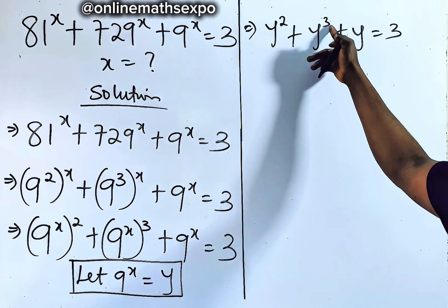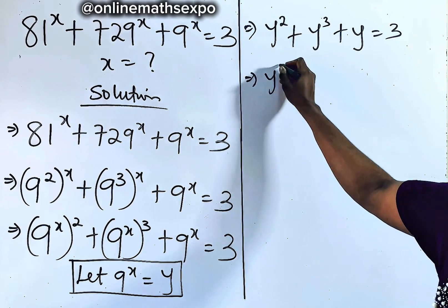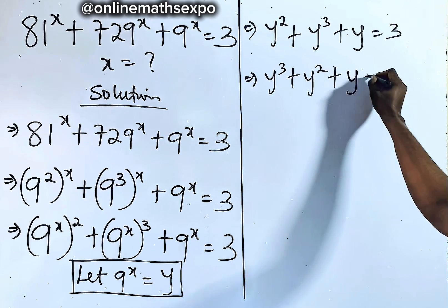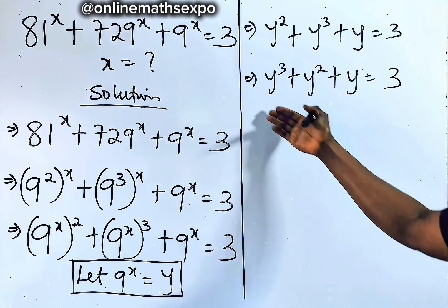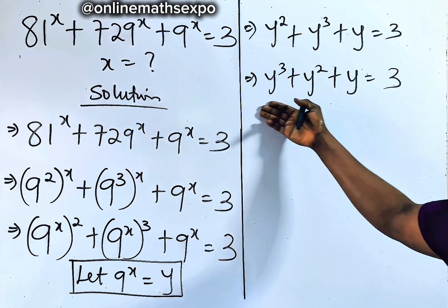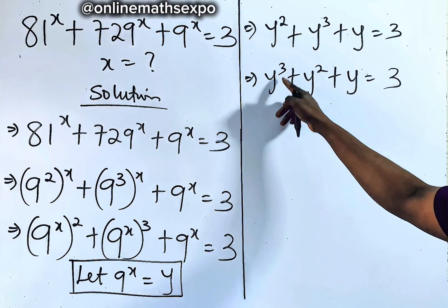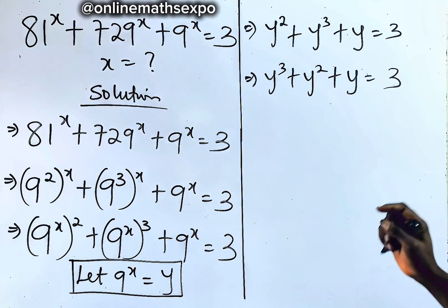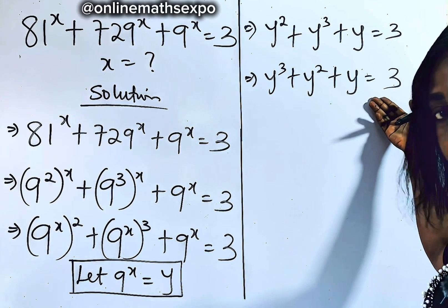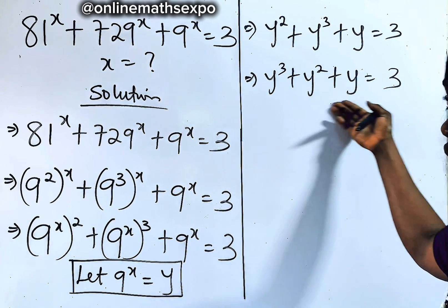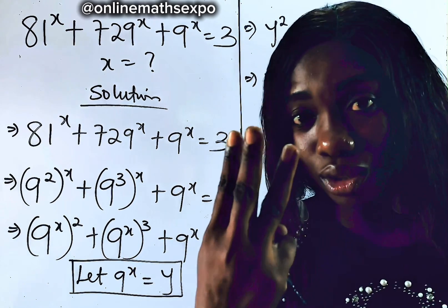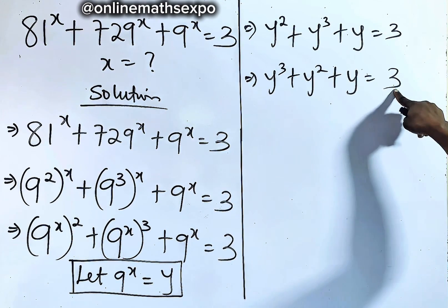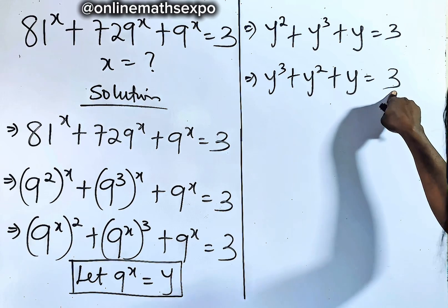Rearranging so that the highest power comes first, we have y cubed plus y squared plus y equal to 3. This is a cubic equation because the highest power of y is 3. We are going to find one of the factors to help us solve — for every cubic, we expect 3 solutions.